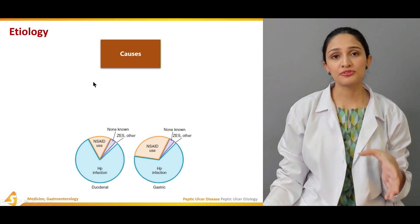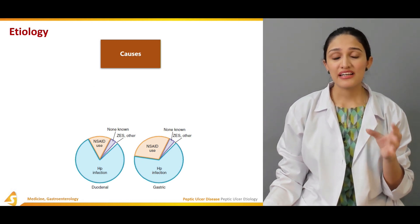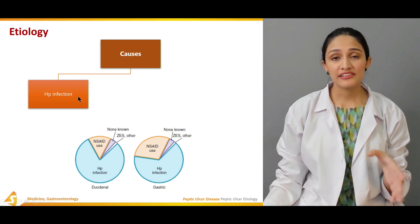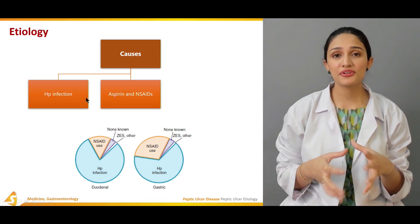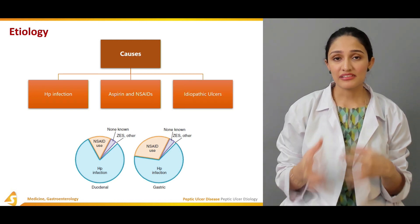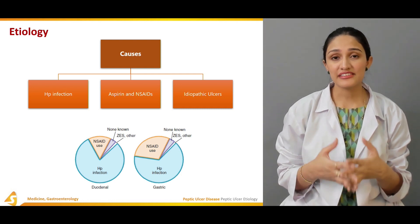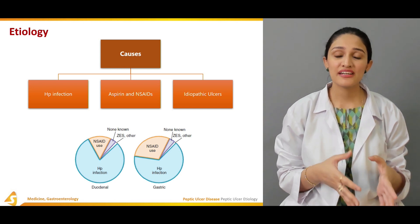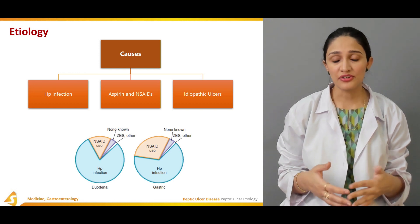Regarding the etiology and causes of peptic ulcer disease, the prime and highest risk factor is Helicobacter pylori infection, second being the use of aspirin and NSAIDs. The third and slightly growing category is idiopathic ulcers — also known as HP-negative and NSAIDs-negative ulcers — which do not really have a defined cause.